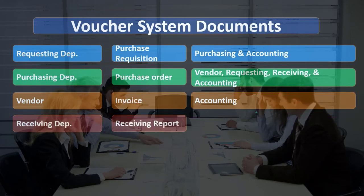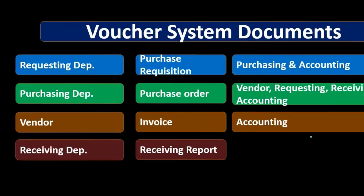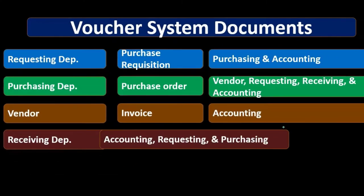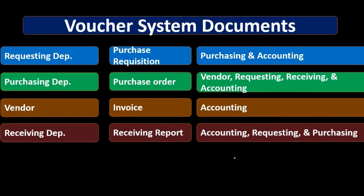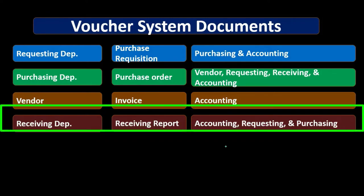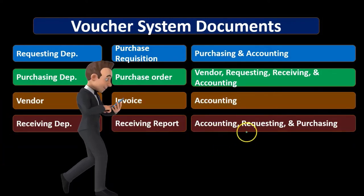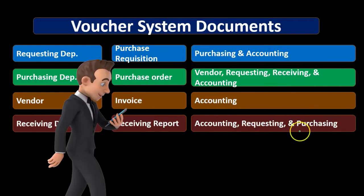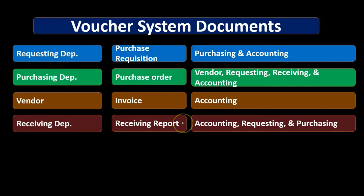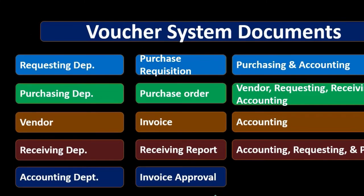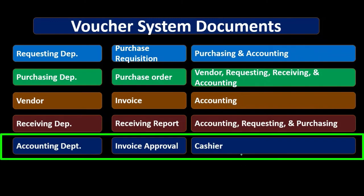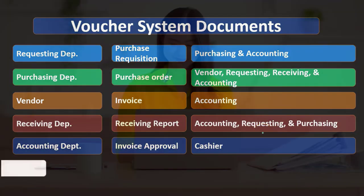The receiving department will have the receiving report, meaning they received the actual item — the truck came in and we got whatever we ordered. The receiving report goes to the accounting department, the requesting department, and the purchasing department. So now the accounting department has the purchase requisition, the purchase order, the invoice, and the receiving report. The accounting department will then have the invoice approval, and finally the cashier will get that information to record it into the system and make the payment.